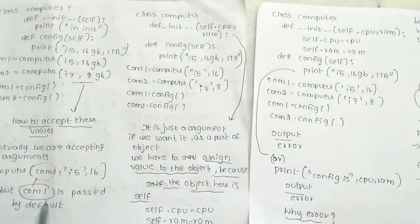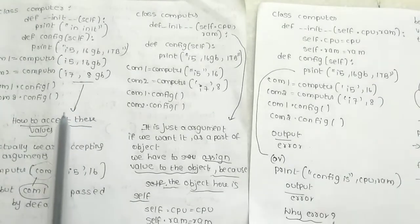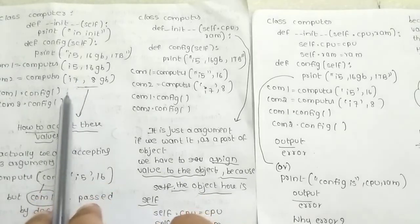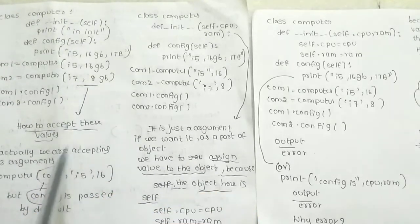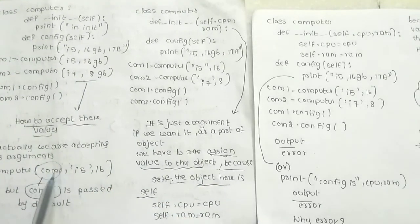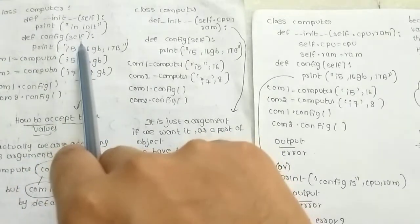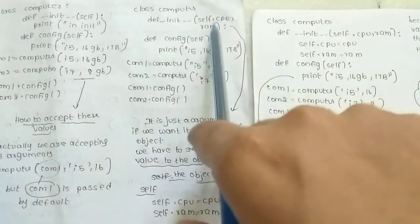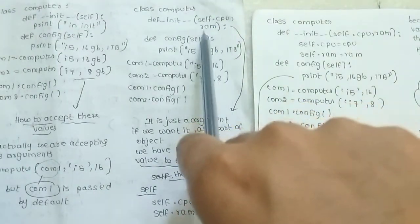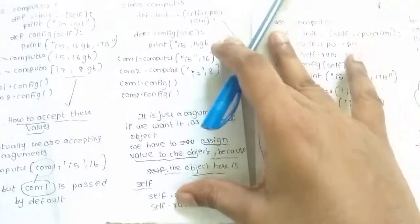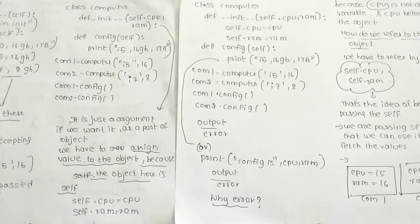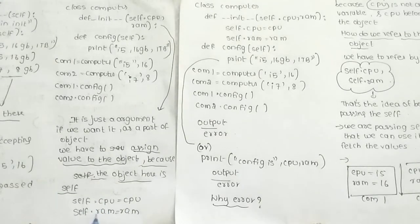Comp1 is self by default. Here are two arguments passed. They will pass the same arguments. The essential assignment is: self.cpu equal to cpu, and self.ram equal to ram.